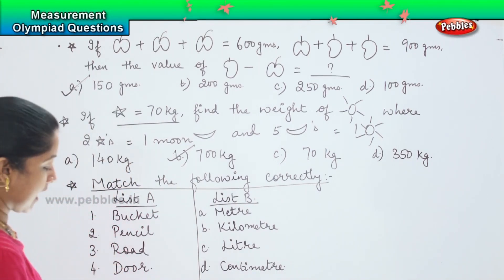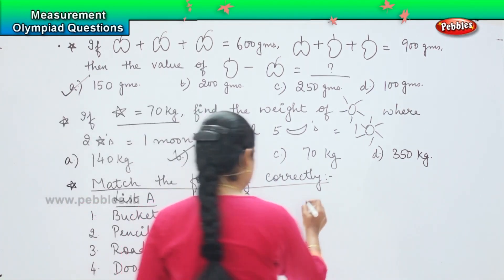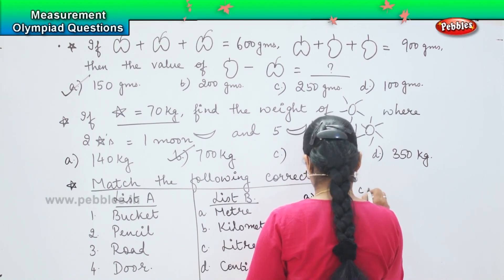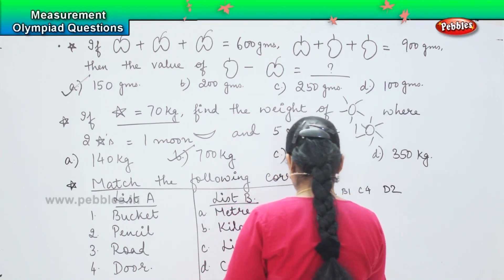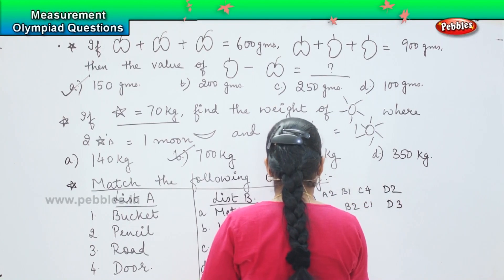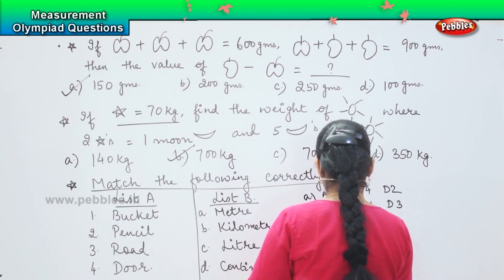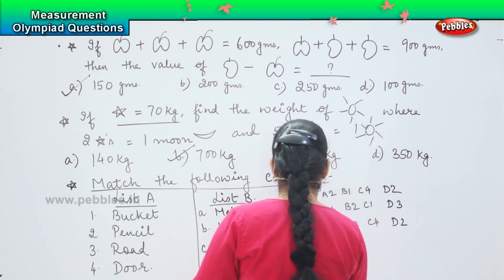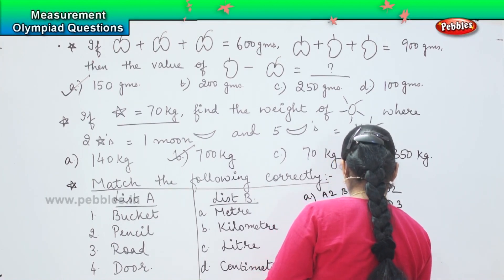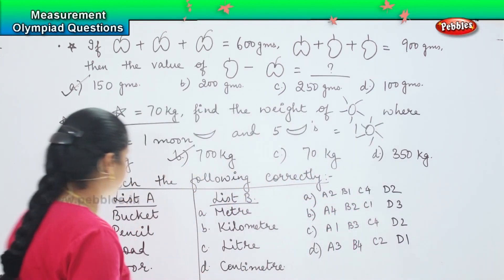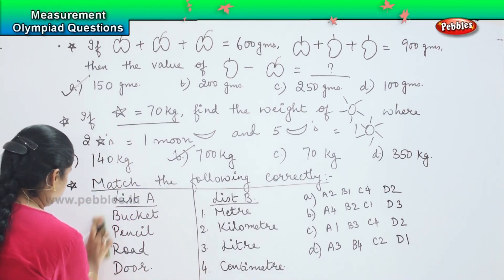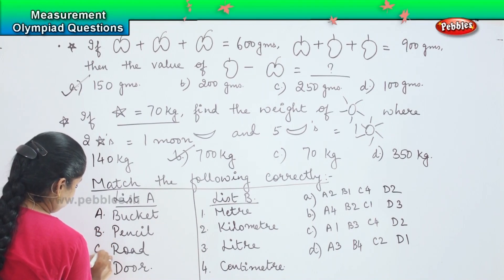Did you understand this one? And your options are option A: A2, B1, C4, D2. Option B: A4, B2, C1, D3. Option C: A1, B3, C4, D2. And option D: A3, B4, C2, and D1. I will change here the number so that it is easy for us, and here I will mark it as A, B, C.